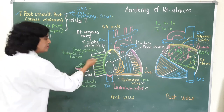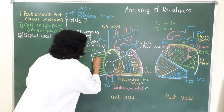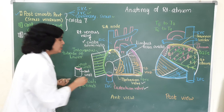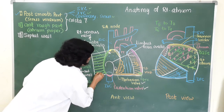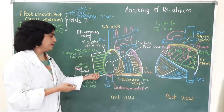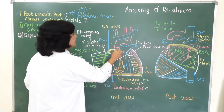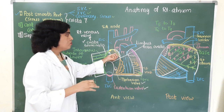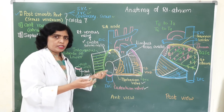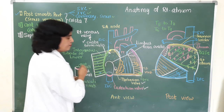These muscular ridges are called musculi pectinati — 'pectin' meaning comb-like structure. Because of these, the anterior rough part is also called the pectinate part. Three to four openings of anterior cardiac veins open directly into the right atrium near the lower part. The musculi pectinati form a sponge-like network within the right auricle, which slows down blood flow and favors the formation of thrombi. If dislodged during atrial fibrillation, this thrombus may cause pulmonary embolism.